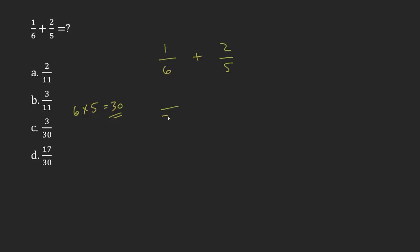Now I did this by taking 6 and multiplying by 5, so I'm gonna have to take the top and also multiply by 5. So that's gonna give me 5 over 30.